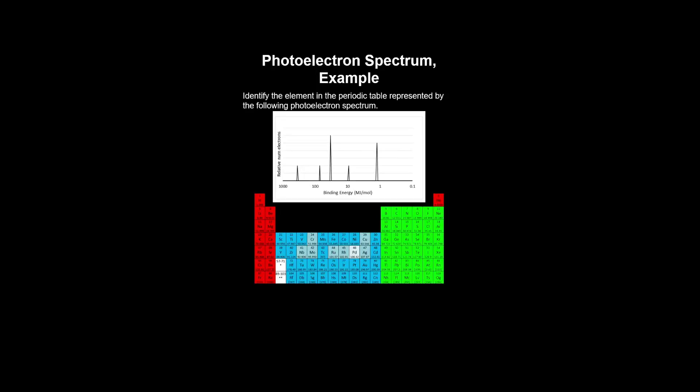Identify the element in the periodic table represented by the following photoelectron spectrum. We start from the nucleus, from the shell with the highest binding energy, and work our way to the valence shell.